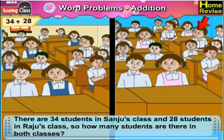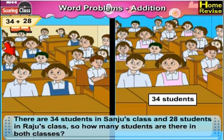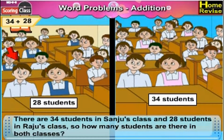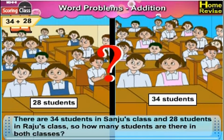Next is 34 plus 28. There are 34 students in Samyu's class and 28 students in Raju's class. How many students are there in both the classes?